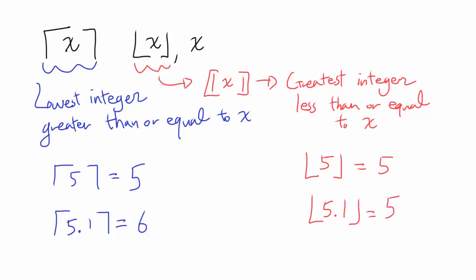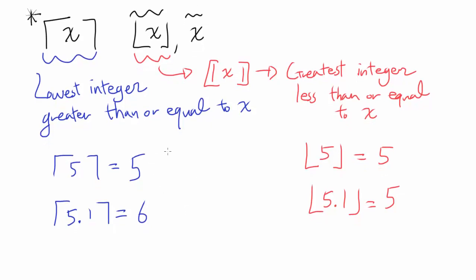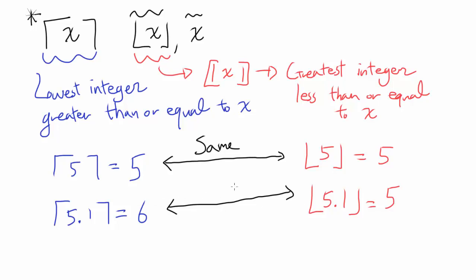In this video, we want to write the ceiling of x using just two operations — the floor — and we can use plus, minus, divide, multiplication, and x. For integers, when you plug in 5 to floor or ceiling, you get the same thing. But when you plug in any non-integer, like 5.1, the ceiling function is going to be greater by 1. So if floor is 5, ceiling is going to be 6.